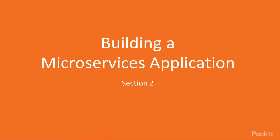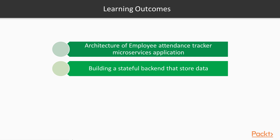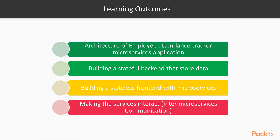Chapter 2: Building a Microservices Application. The learning outcomes of this chapter are: we will go through the architecture of the Employee Attendance Tracker microservices application, building a stateful backend that stores data, building a stateless frontend with microservices, and making the services interact with each other.